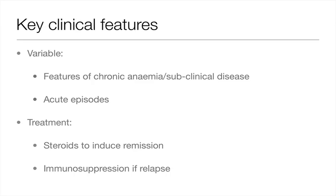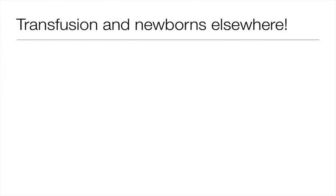Treatment of autoimmune haemolytic anaemia involves steroids for immunosuppressive effects to induce remission in acute episodes, followed by more profound immunosuppression if relapse occurs. Sometimes splenectomy is needed, though this is not effective for cold haemolytic anaemia as most cells are destroyed in the liver rather than the spleen.